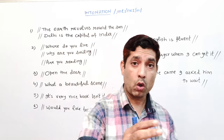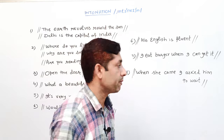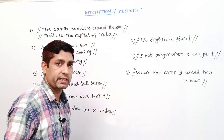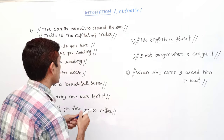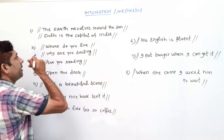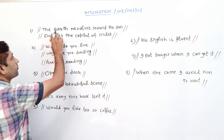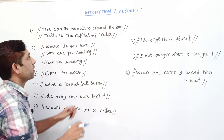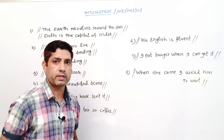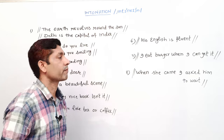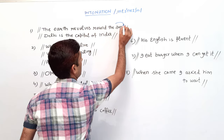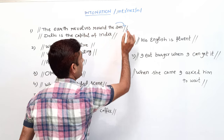Now we will learn some examples and some rules. For instance: 'The earth revolves around the sun.' Here we use falling intonation.